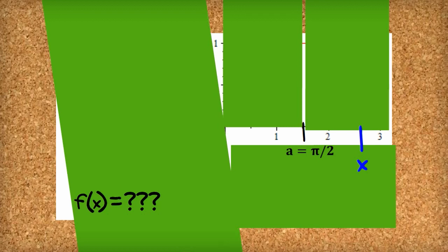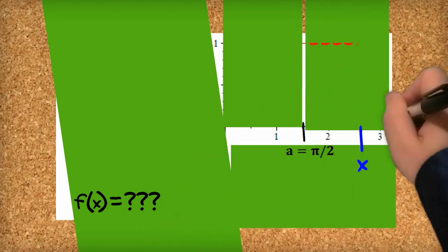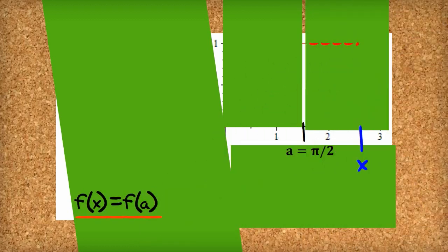So we start with the primary school student. And he says, well, all I can see is that point there 1, which is f a. So I'm going to say that f of x equals f of a.